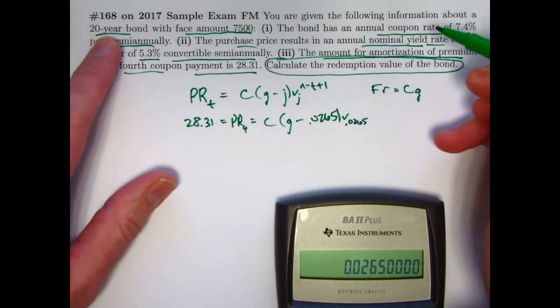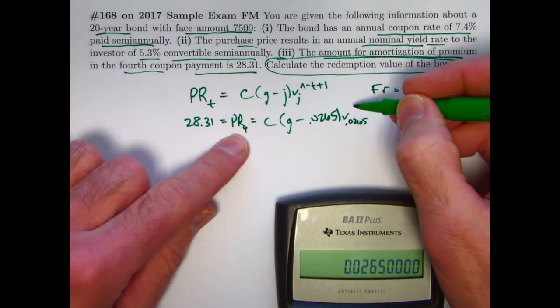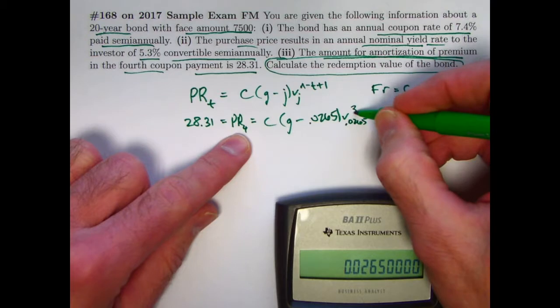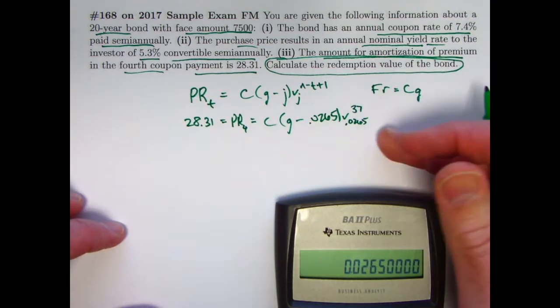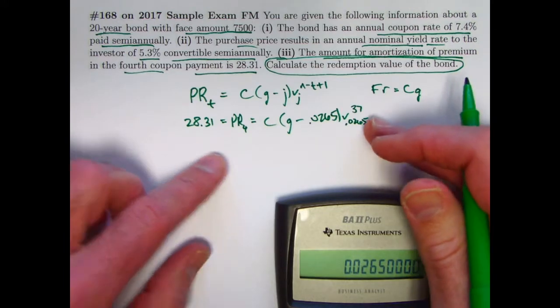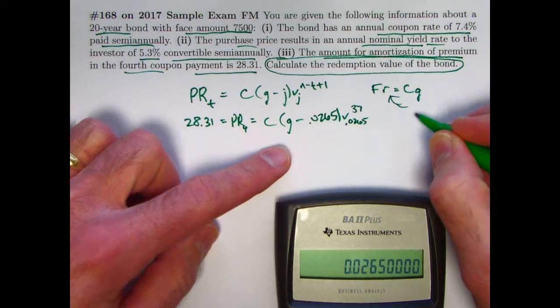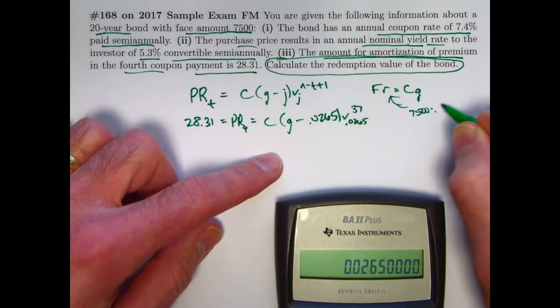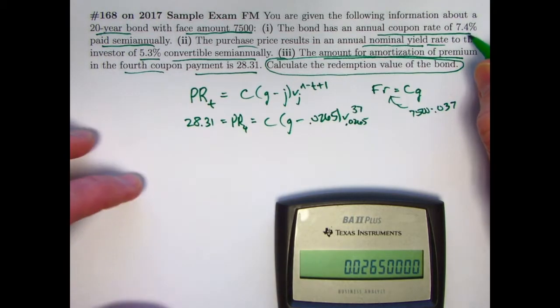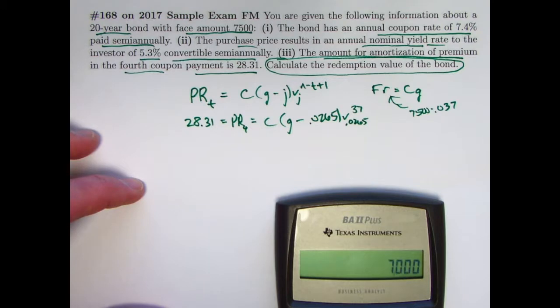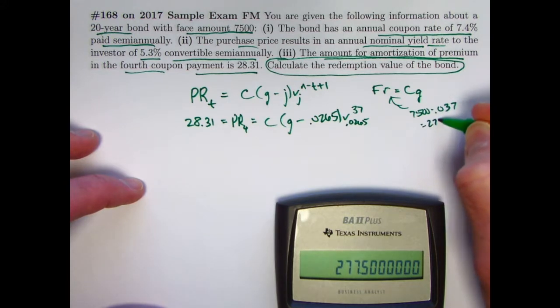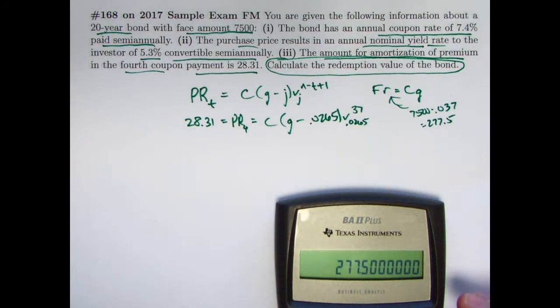N is 40, 20 times 2. T here is 4. 40 minus 4 is 36. Plus 1 is 37. We will be able to go ahead and find V to the 37th power. Divide both sides by that. Multiply the C through here. Use the fact that CG equals F times R. And F times R is going to be 7500 times 0.037, right? Half of 7.4. To help us ultimately solve for C. We'll be able to replace CG with this product, which is the coupon amount. 7500 times 0.037 is 277.5. We will ultimately be able to solve for C.